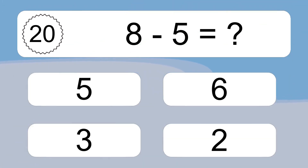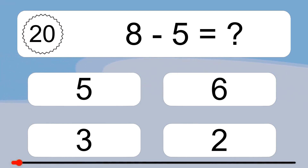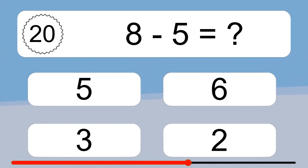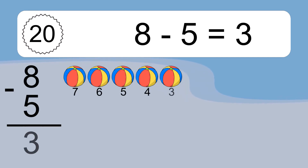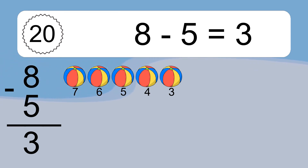10 minus 9 equals what? 10 minus 9 equals 1. Let's count it: 9, 8, 7, 6, 5, 4, 3, 2, 1. 8 minus 5 equals what? 8 minus 5 equals 3. Let's count it: 7, 6, 5, 4, 3.